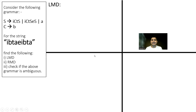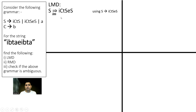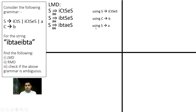First of all, we will start the solution with LMD. Our requirement is IBTA, E, IBTA. We have to start by saying S derives ICTS E S. Then the leftmost non-terminal is replaced with B, and the leftmost is replaced with A using the given production rules.